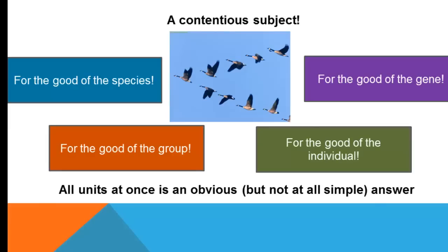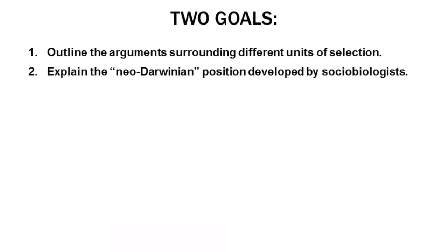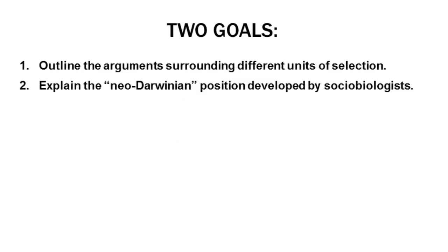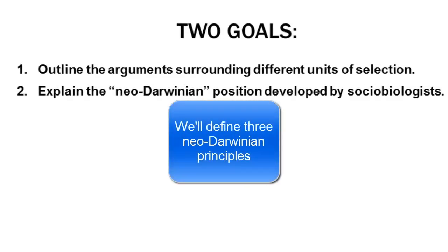An answer that might seem obvious, and which is actually pretty popular right now, is that it's all of these at once. This is called multi-level selection. We're going to work slowly towards that, because understanding it is not at all simple. So we just have two goals here: first, we're going to outline the arguments about the different units of selection; and second, we're going to explain the neo-Darwinian position developed in the 1960s and into the 1970s by social biologists.